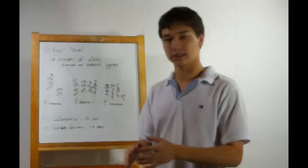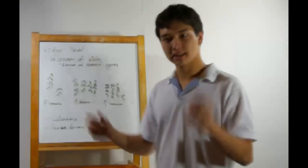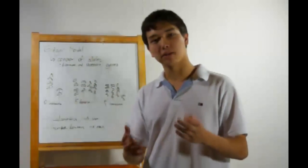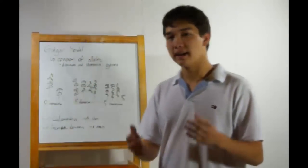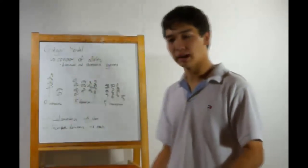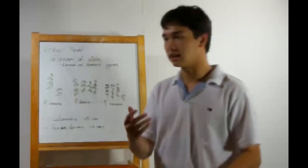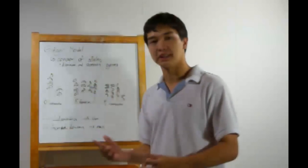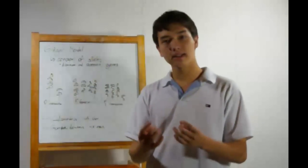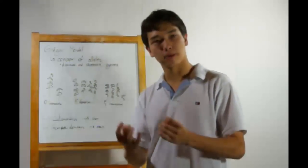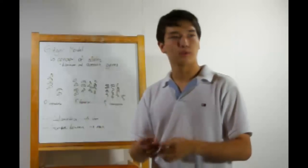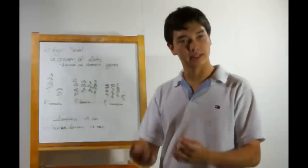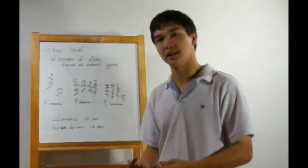Gregor Mendel saw this and went, 'WHAT?!' Somehow this short trait had skipped a generation, so he sat down and started thinking. And he came up with the idea of alleles. Alleles are the different forms of a trait — what we understand now as different forms of a gene.